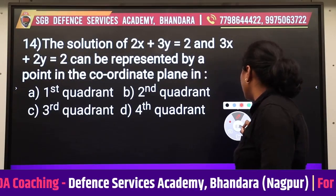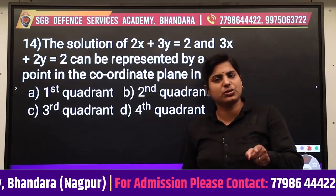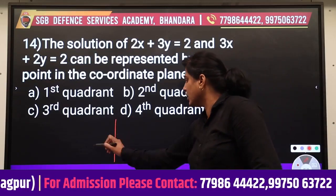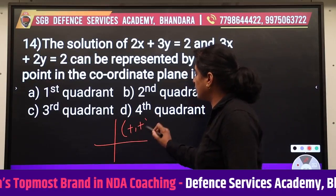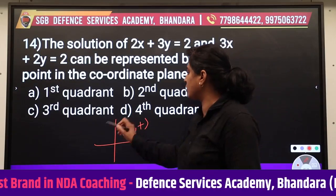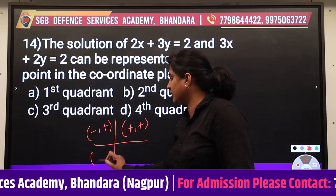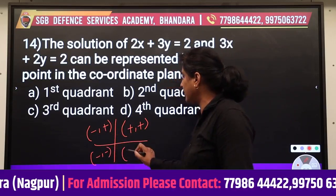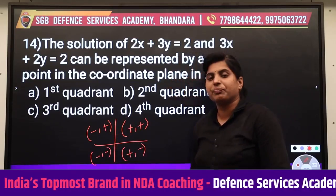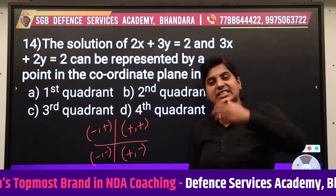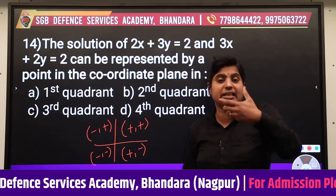Everybody knows that in the first quadrant x and y both coordinates are positive; second quadrant negative-positive; third quadrant negative-negative; fourth quadrant positive-negative. Now as we get the values of x, we will determine the quadrant.